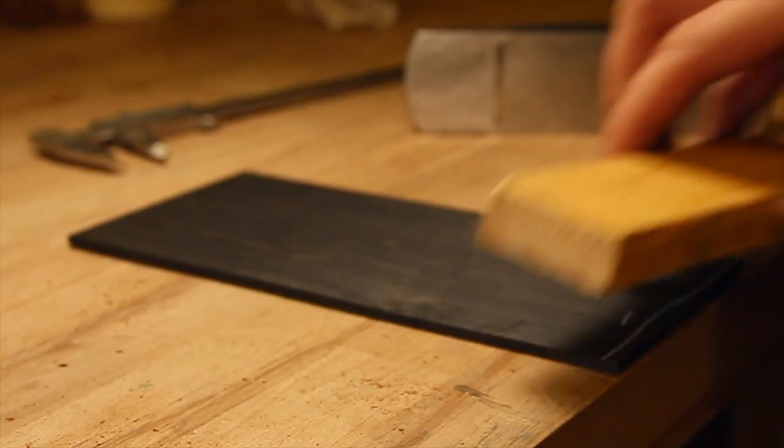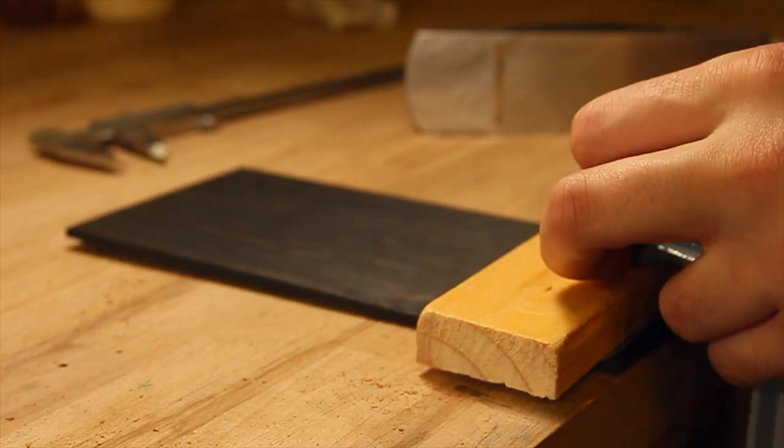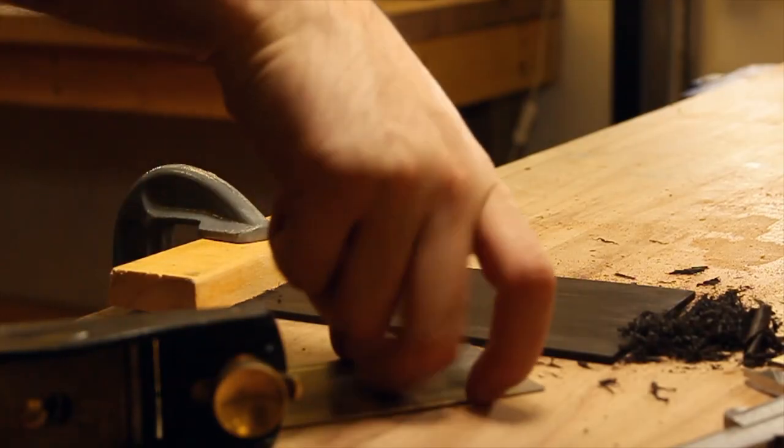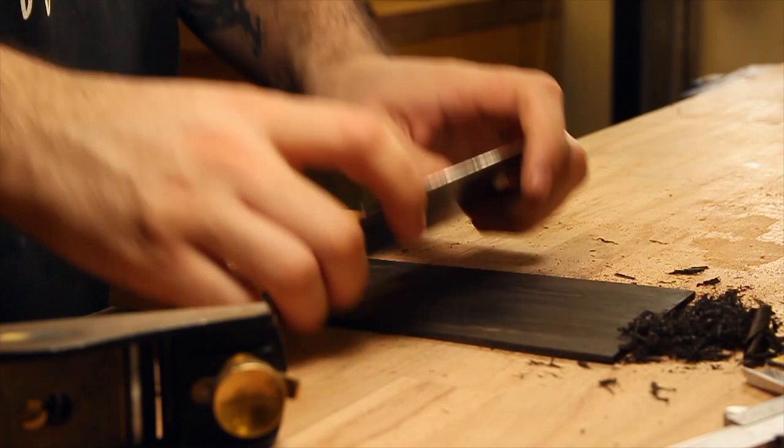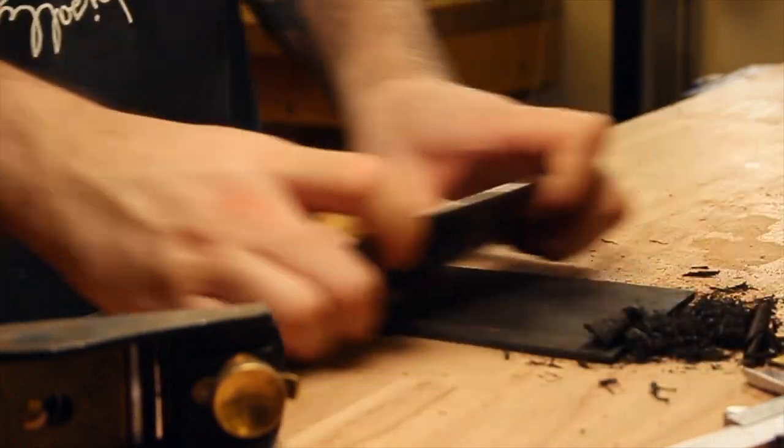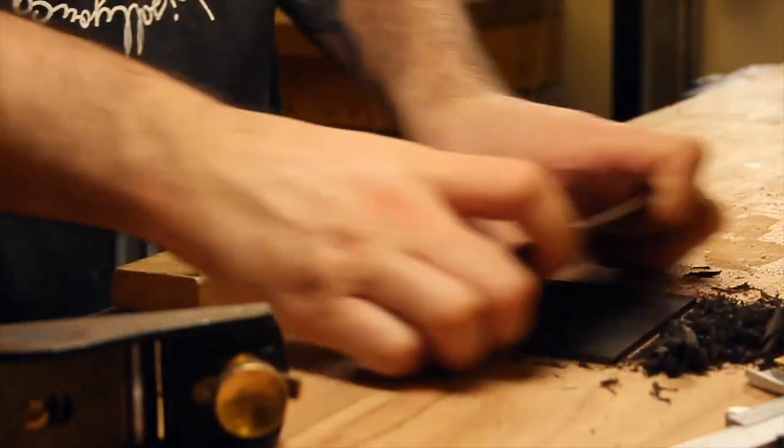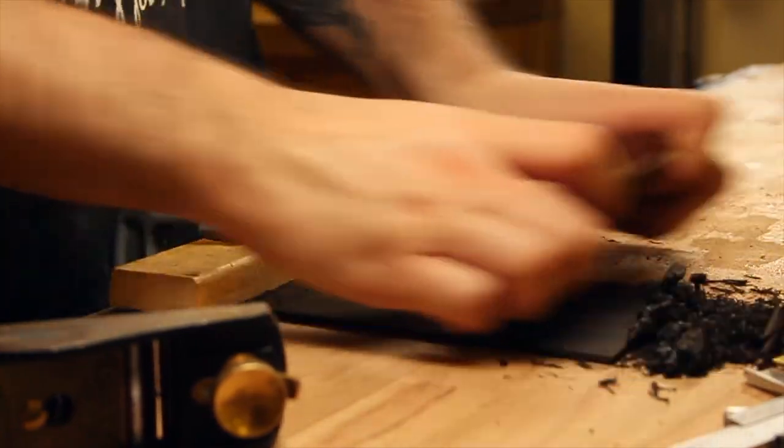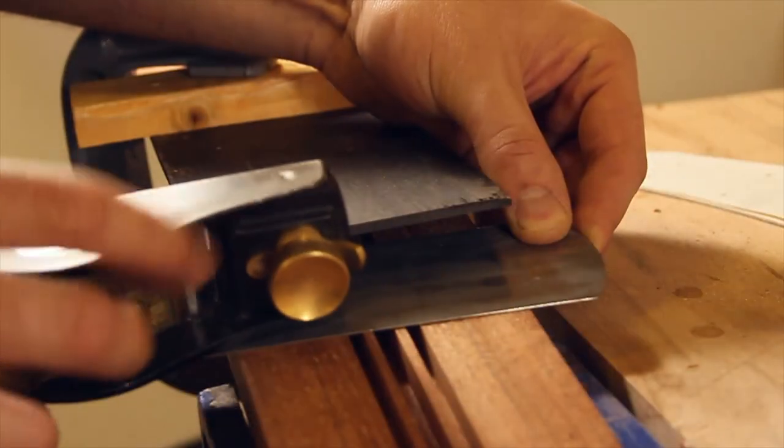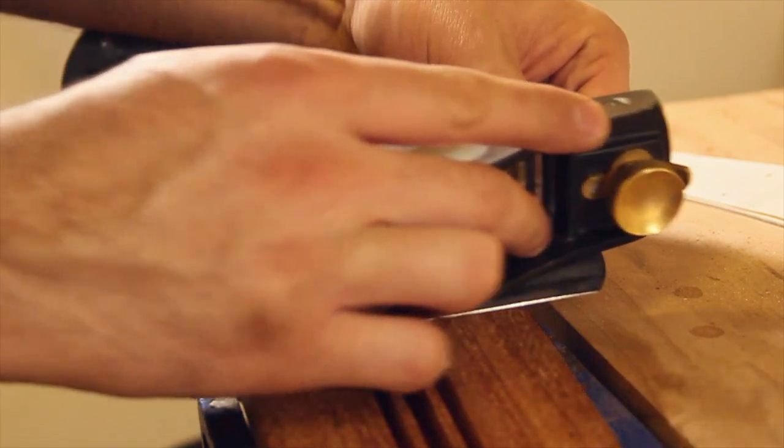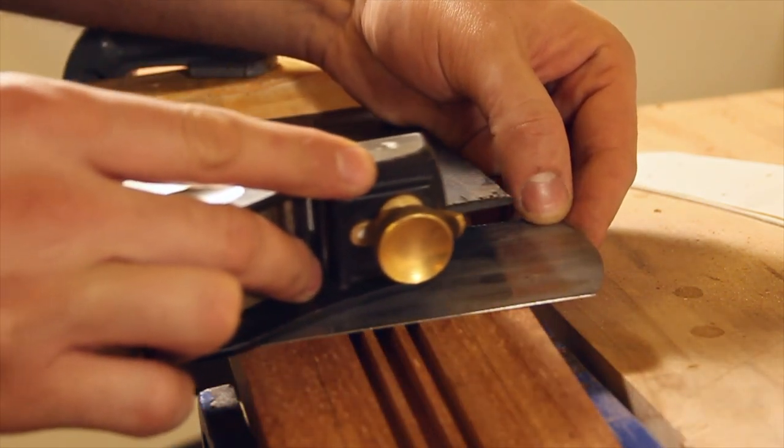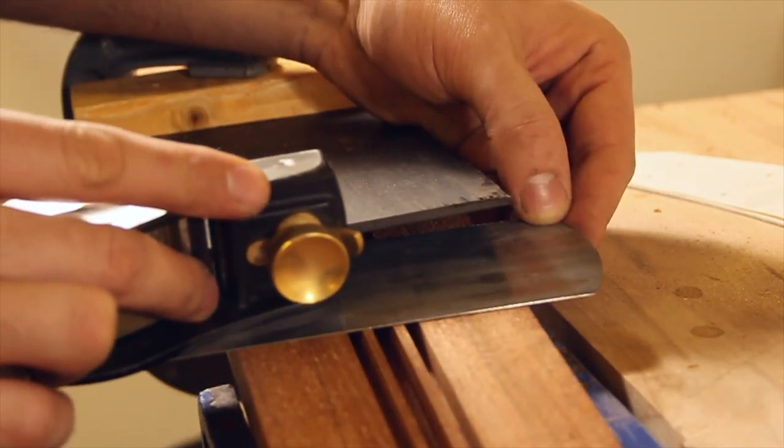By clamping the ebony veneer to my bench I was then able to clean the veneer ready for gluing to the headstock. A good tip for planing the angle into the veneer is to place a scraper under the plane. This will prevent any unnecessary damage to the neck.